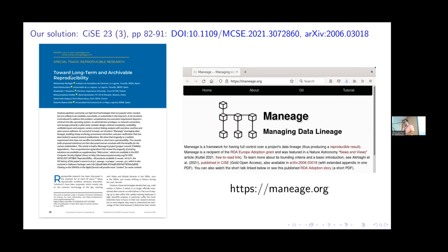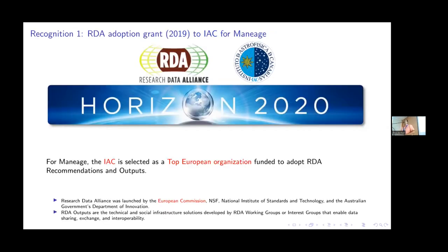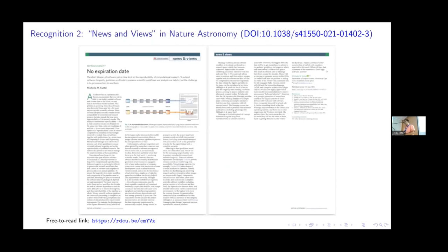We published a paper in Computing in Science and Engineering (CSIE) and in 2019 we actually got a grant from RDA — the Research Data Alliance — because Manage satisfied all of their recommendations on open software. My first visit to Granada was thanks to this grant. We had nice discussions just before COVID — less than a month before COVID hit and we were locked up. Later when the paper came out, Nature Astronomy did a nice review titled 'No Expiration Date.' I recommend you read it. You don't need a subscription to Nature Astronomy to read it, they gave it a free-to-read listing.